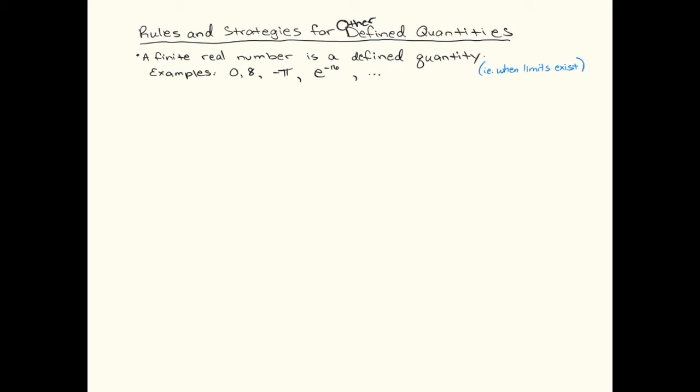Just a quick overview. What is a defined quantity? Certainly a finite number. Limits that go to infinity, they do not exist. Those are defined as well because you know, yes, this limit does not exist. Yes, this limit does exist. Those are the situations that are defined.